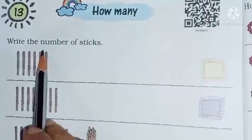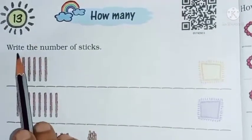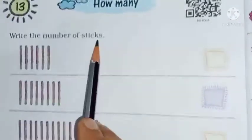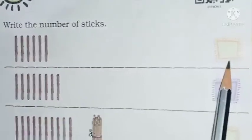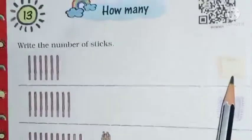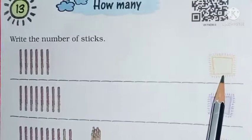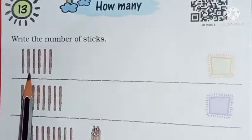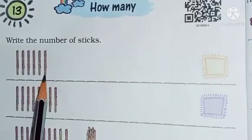Write the number of sticks. So children, what should we write? Number of sticks. We have to count in this box. Counting how many — so see: 1, 2, 3, 4, 5, 6.